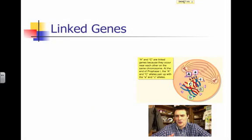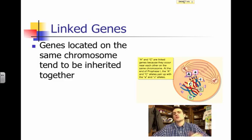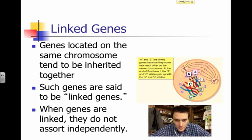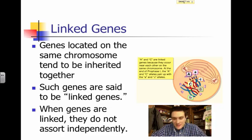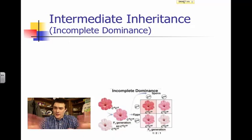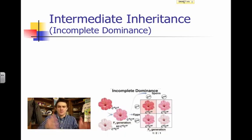A couple minutes ago there was a disclaimer about an exception to the law of independent assortment — and it's linked genes. Every now and then we've got genes located on the same chromosome, and they tend to be inherited together; such genes are known as linked genes. When genes are linked, located roughly in the same area of a chromosome, they do not assort independently. In our diagram, genes for A and genes for C are found right next to each other on those two homologous chromosomes, so they assort in a non-independent fashion.